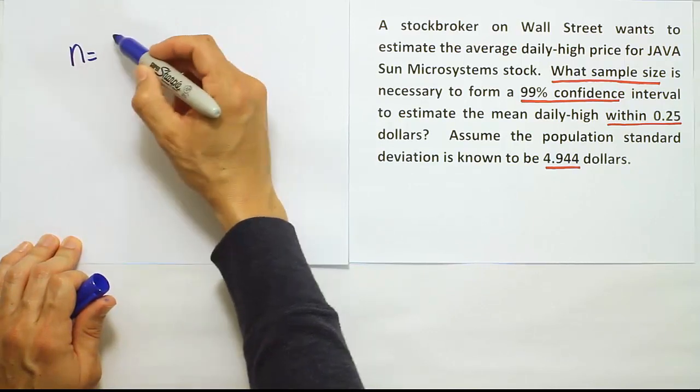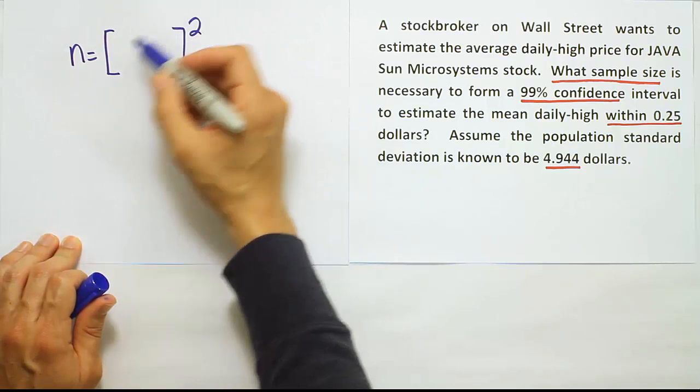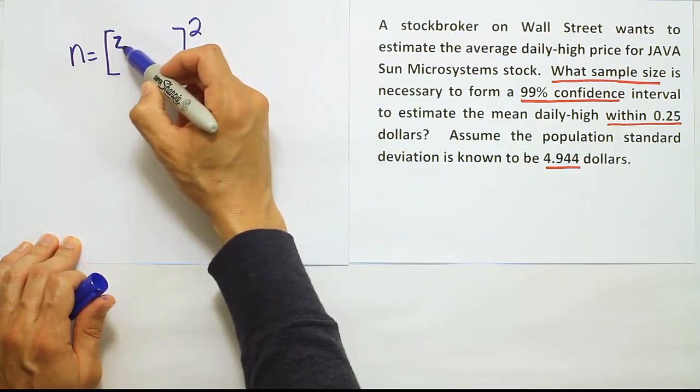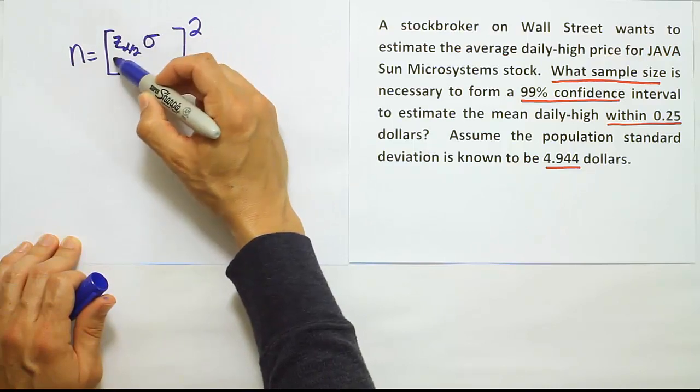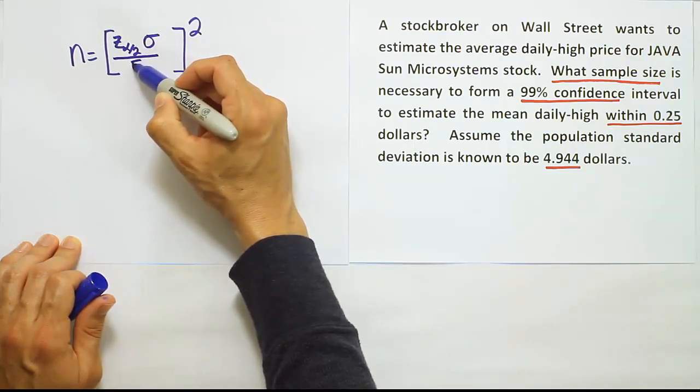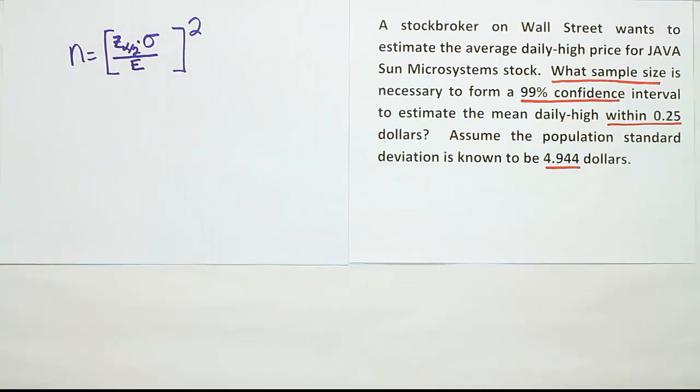n equals, use a parenthesis here, put a square on the outside of that, and then it'll be z alpha divided by 2 times the population standard deviation over the margin of error. All that's inside those parenthesis, and then you're going to square that result.